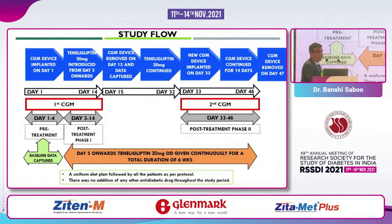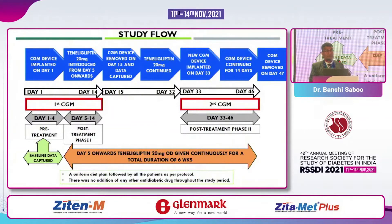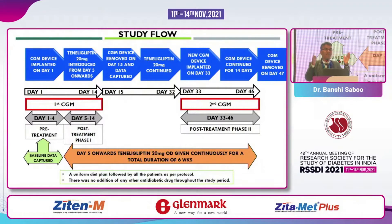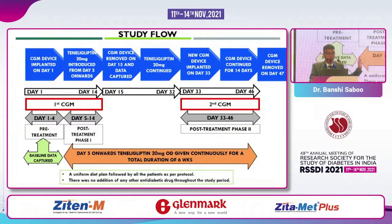The study flow: CGM was implanted on Day 1. Teneligliptin 20 mg was introduced from Day 4. We wanted to know what happened in the first four days when the person was only on metformin. On Day 5, the patient was started on teneligliptin. The CGM device was removed on Day 15, capturing 10 days of data during glyptin therapy. Then a second CGM was implanted on Day 33 and continued for another 14 days, removed on Day 47.